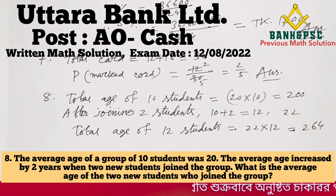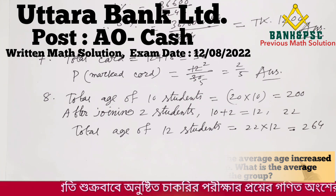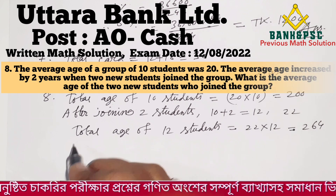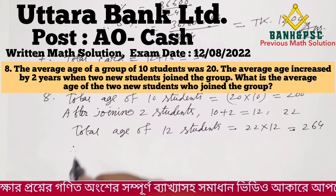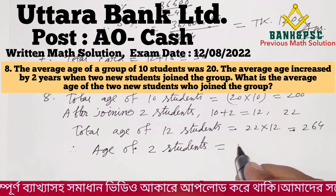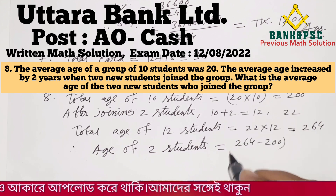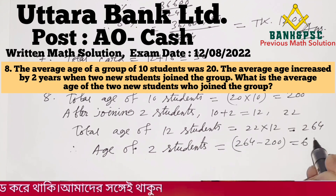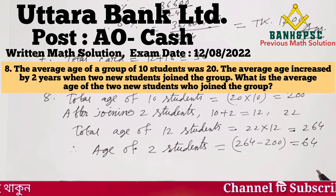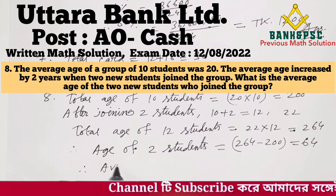Total age of 12 students = 264. So the total age of the 2 new students = 264 - 200 = 64. Their average age = 64 / 2 = 32.